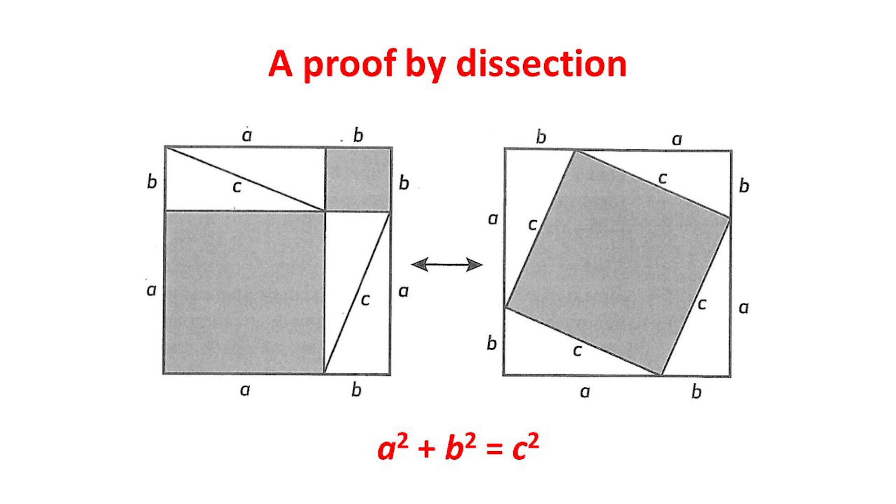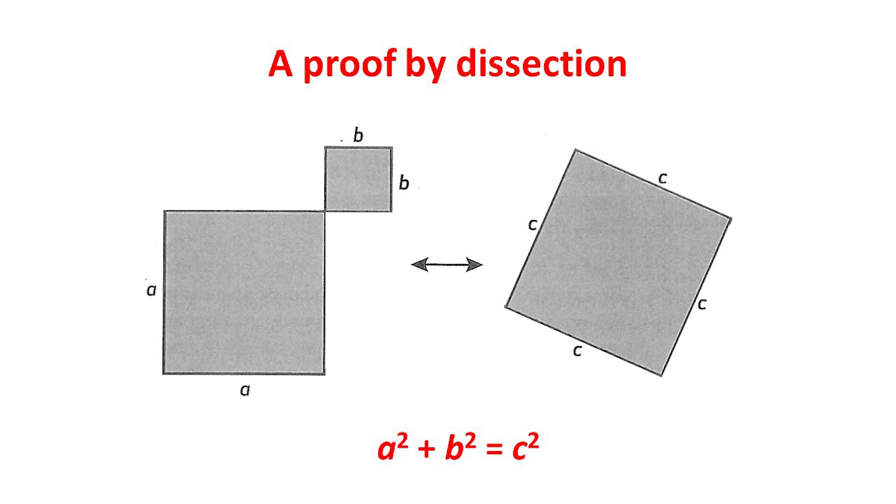If we now remove these four triangles from the left-hand picture, we get two shaded squares with areas a² and b². While removing them for the right-hand picture leaves a single shaded square with area c². Equating these two remaining areas then gives a² + b² = c², as we wanted.